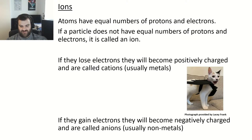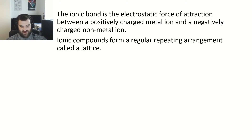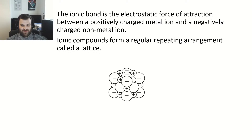In ionic compounds, the force of attraction is between the positively charged metal ion and the negatively charged non-metal ion. These ions form a regular repeating arrangement called a lattice, as shown in the diagram on screen.